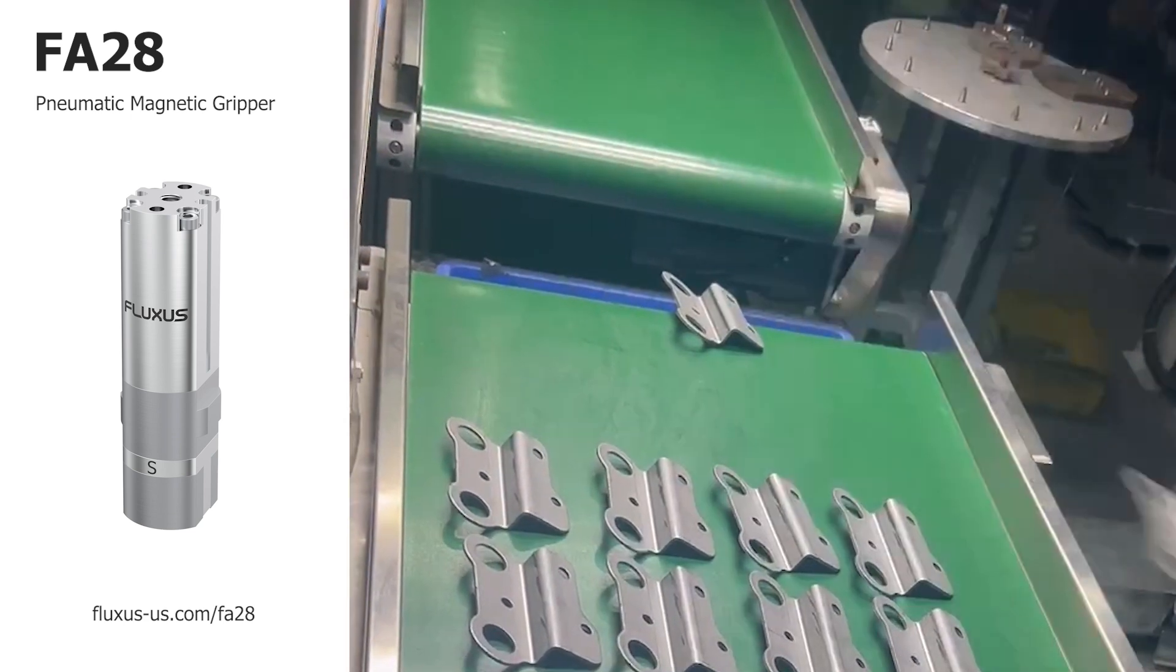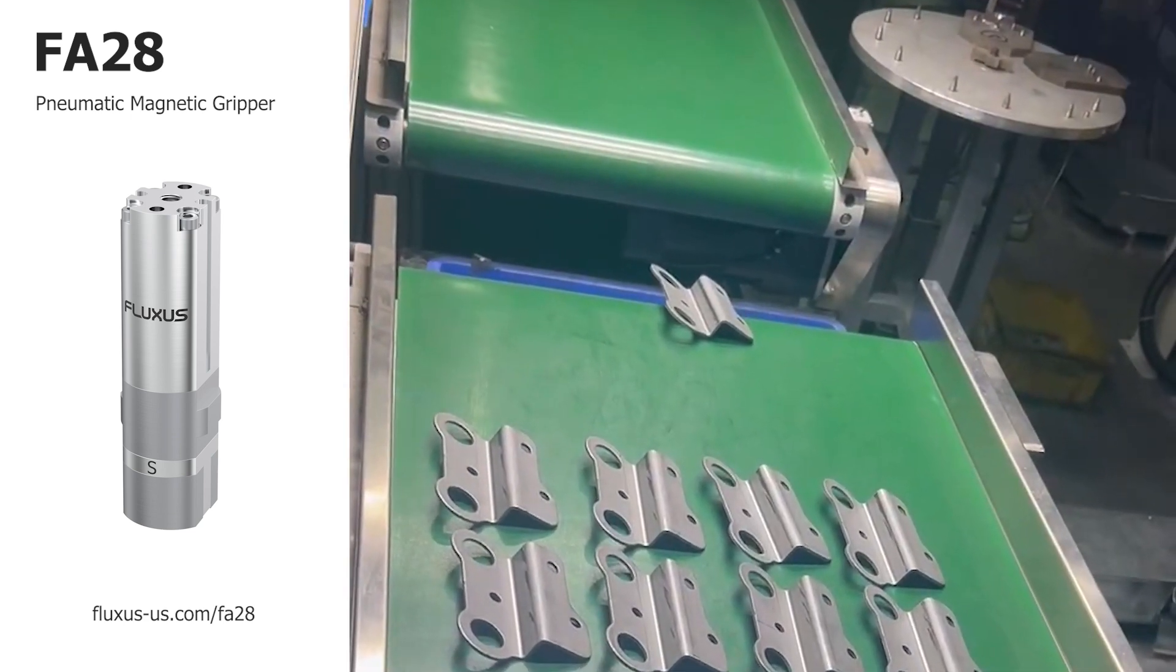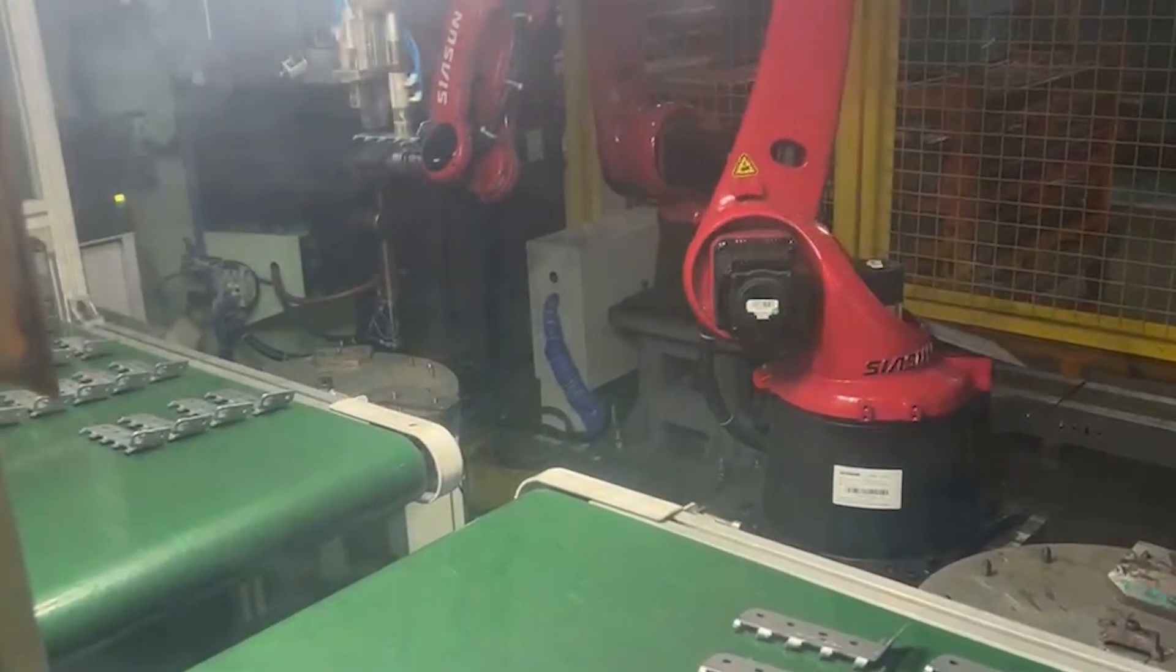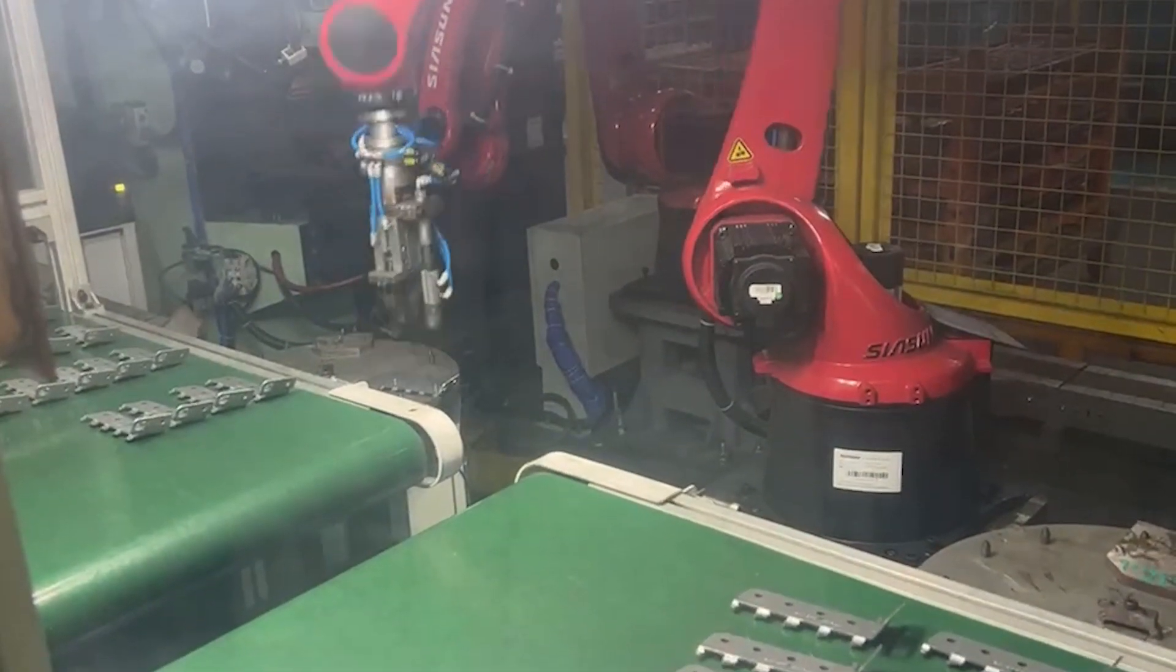The FA28 is a pneumatic magnetic gripper from Fluxus. The product is specifically designed to handle small steel parts that other gripper products often struggle with.